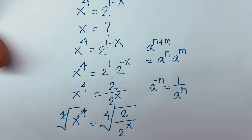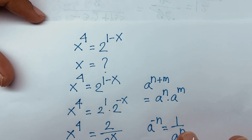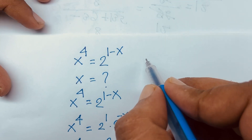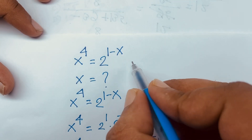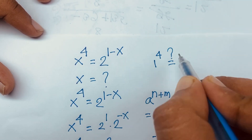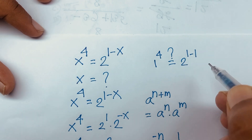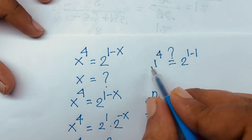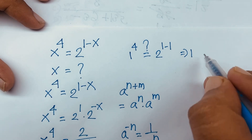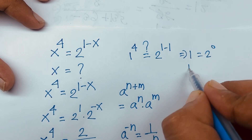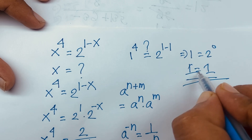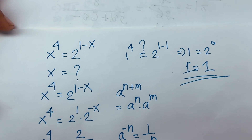Our question is x to the power 4 is equal to 2 to the power 1 minus x. If I put the value x = 1 into this equation: 1 to the power 4 equals 2 to the power 1 minus 1. So 1 to the power 4 is 1, and 2 to the power 0 is also 1. So 1 equals 1, confirming that x equals 1 is our correct answer.